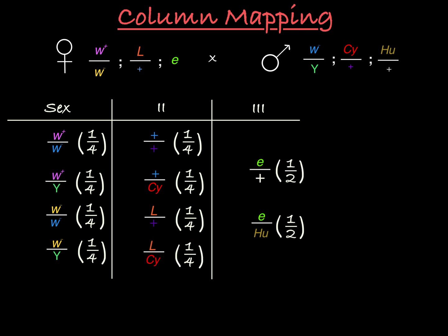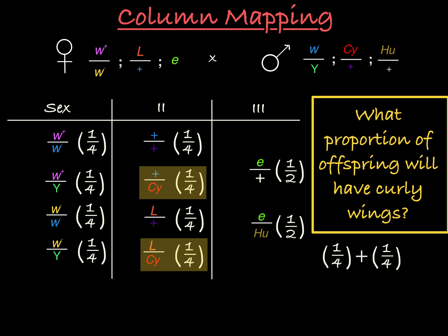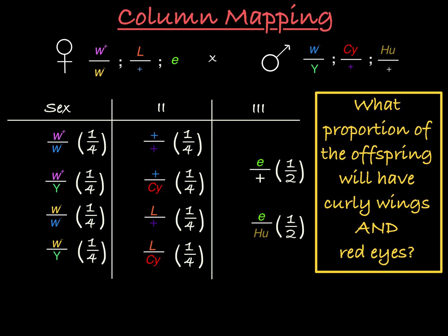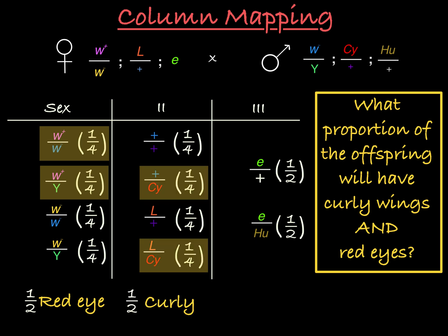You can also focus in on one or two phenotypes. For example, what if I wanted to know what percentage of my offspring will have curly wings? Curly wings will result from two genotypes in the second chromosome column, so I add those two numbers together and see that half of my offspring will have curly wings. What if I wanted to know what percent will have red eyes and curly wings? Half of my offspring will have red eyes and half will have curly wings, so I multiply one half by one half and see that one quarter of offspring will have red eyes and curly wings.